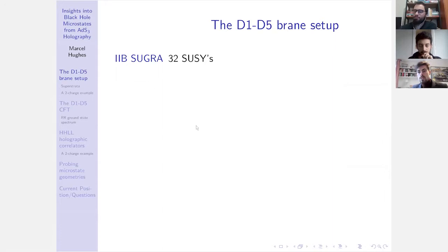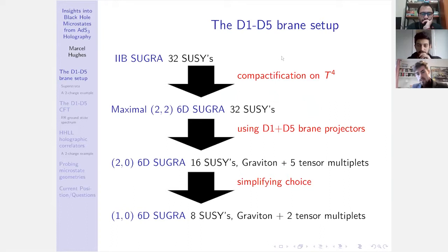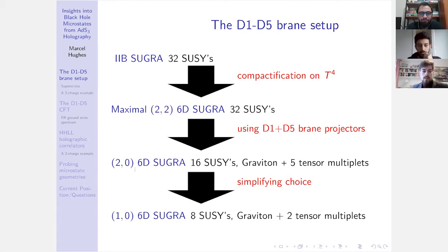What happens to the supergravity theories? We simplify and consider configurations that are invariant under the coordinates of the T^4, so we can reduce our problem to 6D. These configurations can always be uplifted to 10D if desired. The general theory we'll be working with is 6D (2,0) supergravity. I should note one could equally consider K3 instead of T^4, in which case not much changes in the final conclusions, especially in the large N limit, although you get 21 tensor multiplets as the matter instead of five.